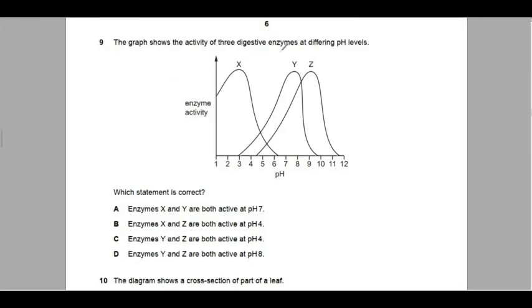Alright, let's look at this one. The graph shows the activity of three digestive enzymes at different pH levels. We've got enzyme activity here like we have been doing, and this time we're talking about pH. So 1, 2, 3, 4 up to 12. Enzyme X, Y, and enzyme Z with different graphs. This graph is for enzyme X, this graph is for enzyme Y, and this one is for enzyme Z. So which statement is correct?